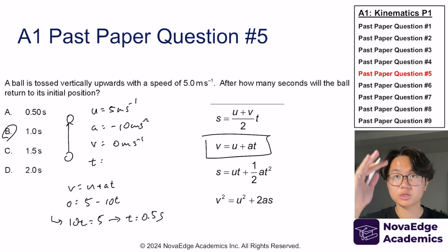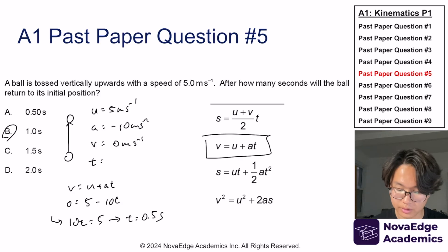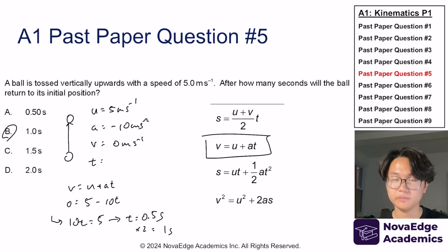For the ball to come down, it's actually just double that. So times 2, that gets us to 1 second total.